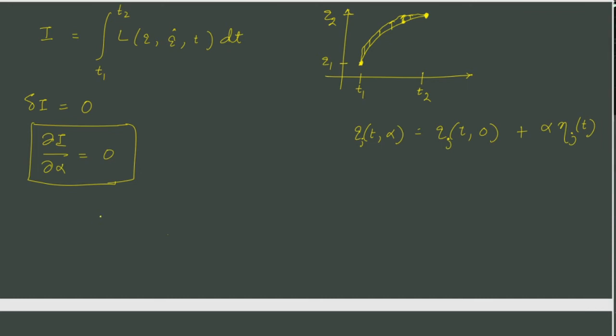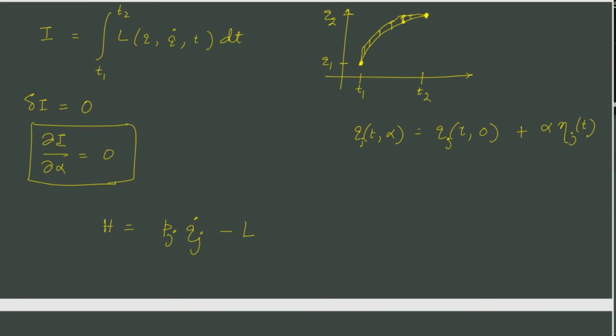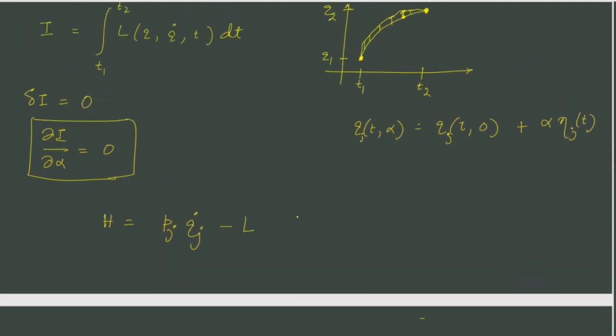So what we do is we use our definition of the Hamiltonian which if you recall was just pj qj dot minus L. Of course there is a sum over j because we are using Einstein's summation convention so we are not writing the sum all the time. So if that happens then that tells us that our modified equation, this integral we can write as t1 to t2 and it would be just pj qj dot minus H. So we just replace L by an equivalent description.